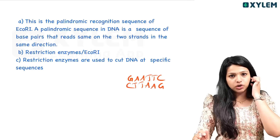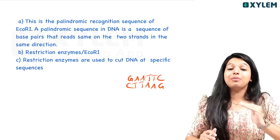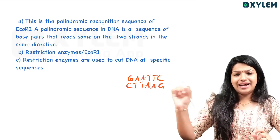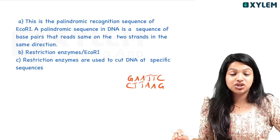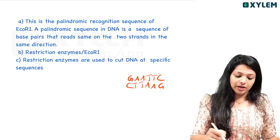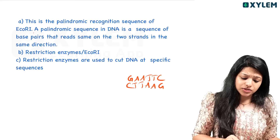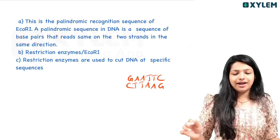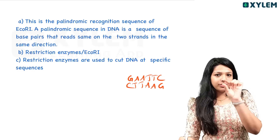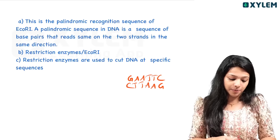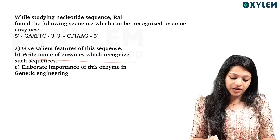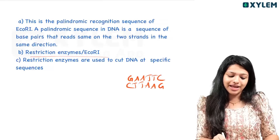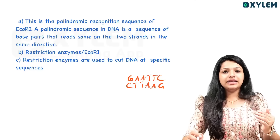This sequence is called a palindromic sequence. A palindromic sequence in DNA is a sequence of base pairs that reads the same on both strands in the same direction — similar to how a palindrome reads the same forwards and backwards. The enzyme which recognizes such sequences is a restriction enzyme. We call it EcoRI.